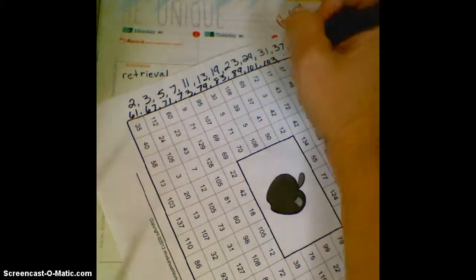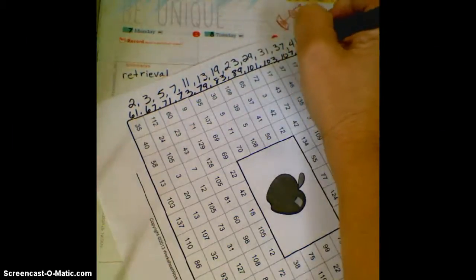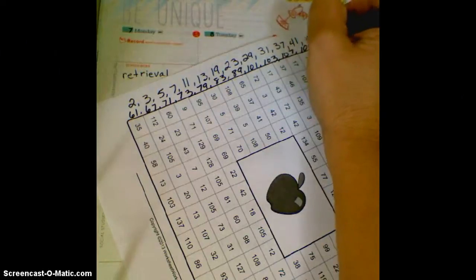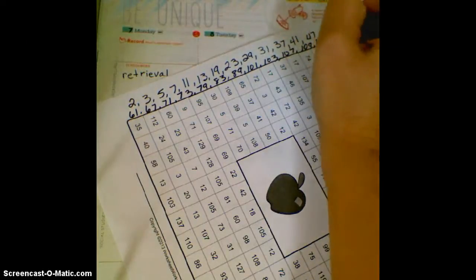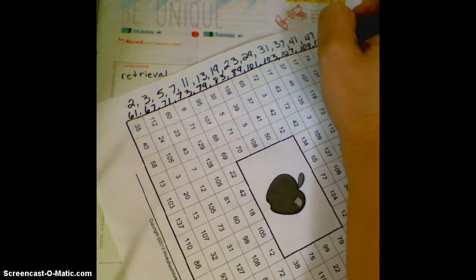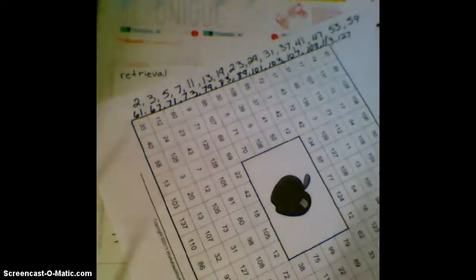103, 107, 109, 113, and I'll do one more and then I'm running out of room, 127. We'll add more if we need to. All right, so this gives us something to start with.